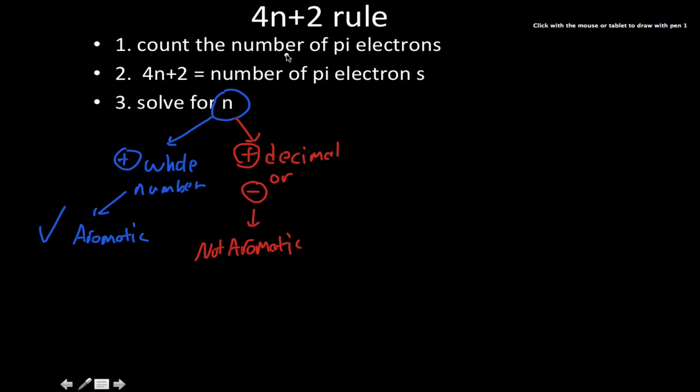Okay, so talking about the 4n or 4n plus 2 rule, or Huckel's rule, for determining whether or not a compound is aromatic or not.